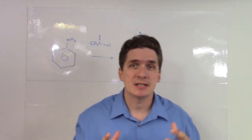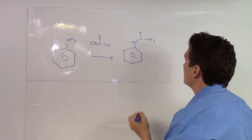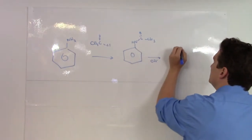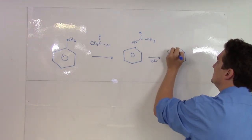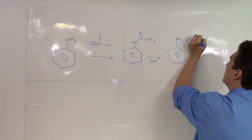This will serve as a protecting group, and the way we remove this protecting group is we simply run this under basic conditions. Under hydroxide and something like ethanol, we'll end up recovering the aniline and the carboxylic acid.